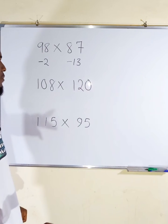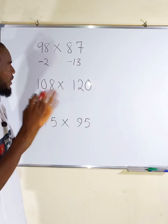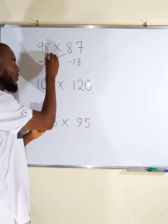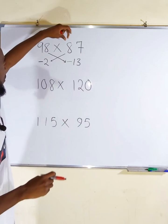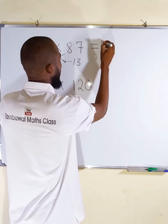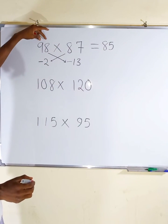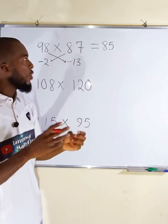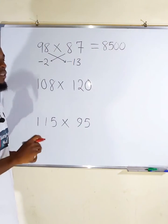Secondly, if you realize something, I didn't enter this number or this number, you will get the same value. 87 minus 2 will give us 85, likewise 98 minus 13 will give us the same value. But remember we are dealing with 100, so we add extra two zeros in front. This is the first step.